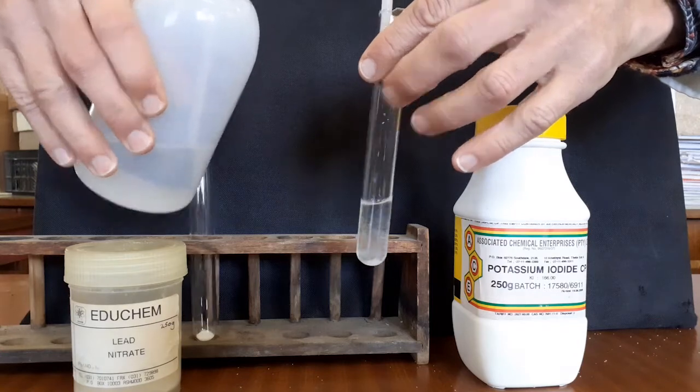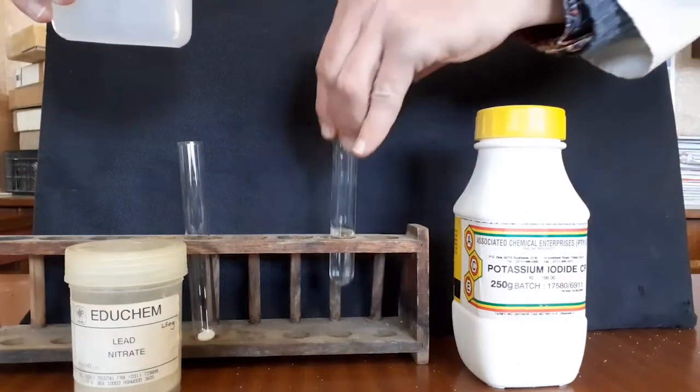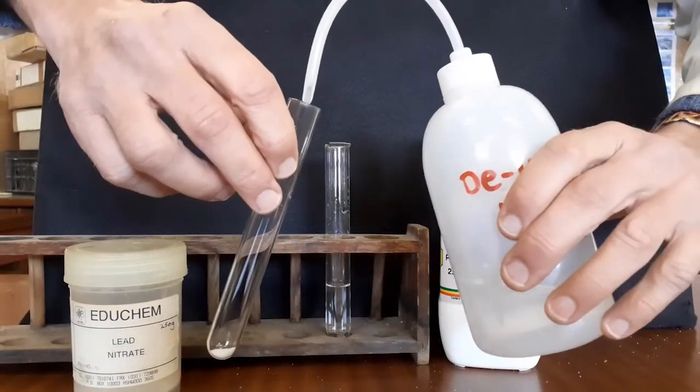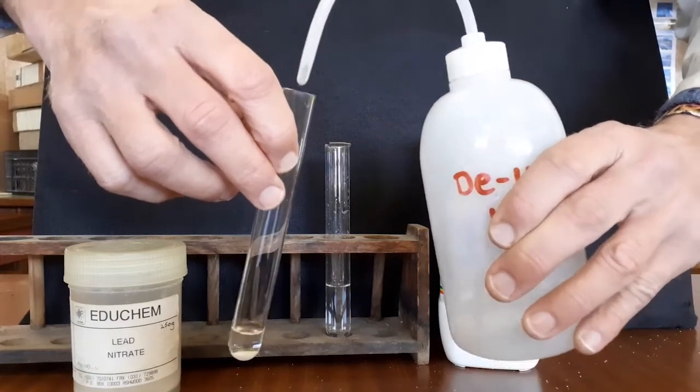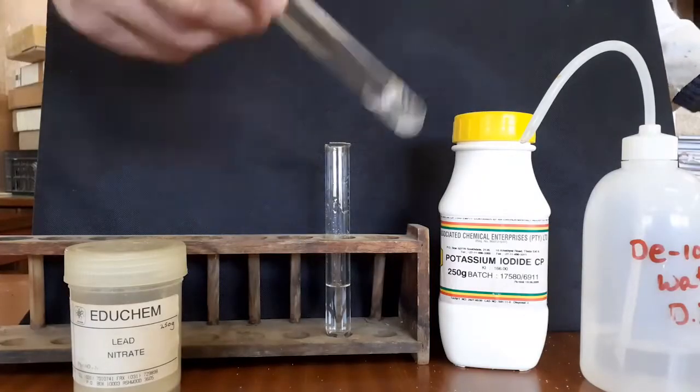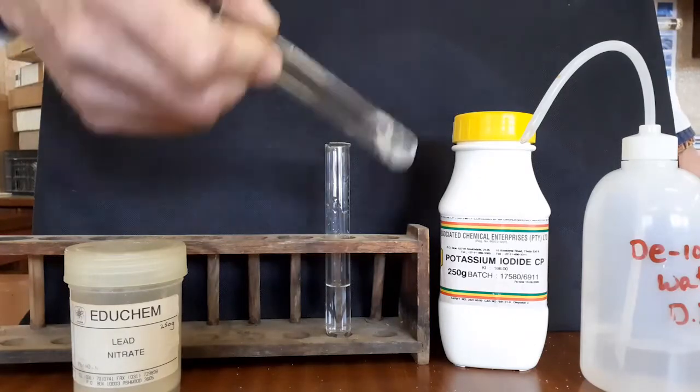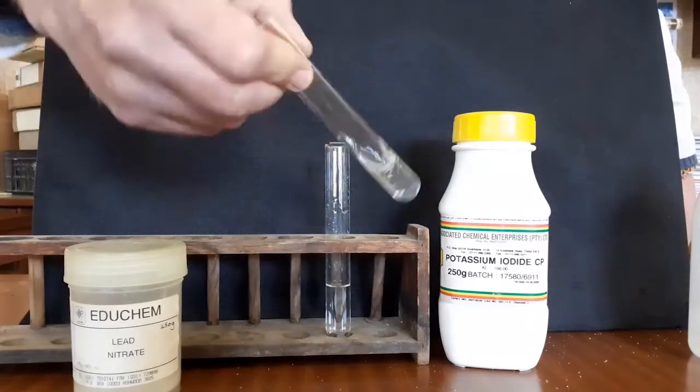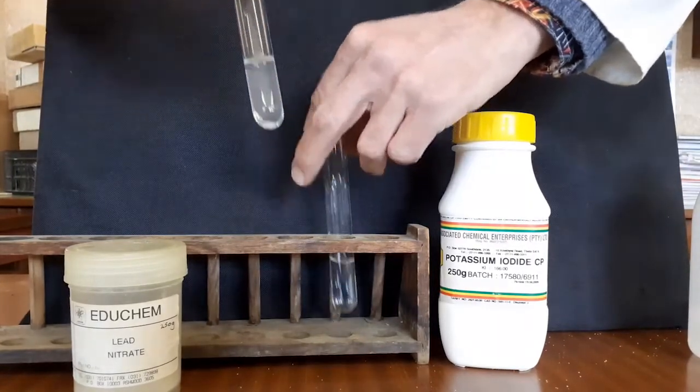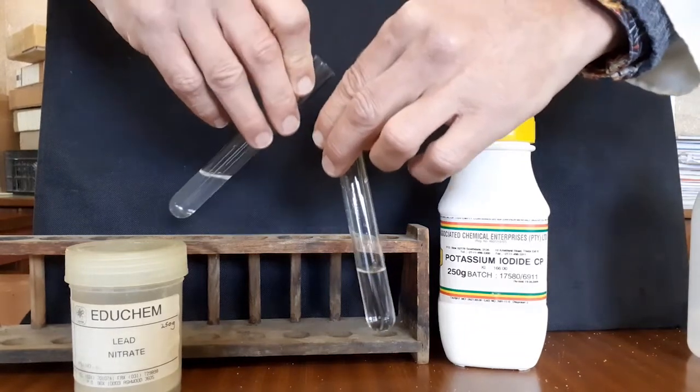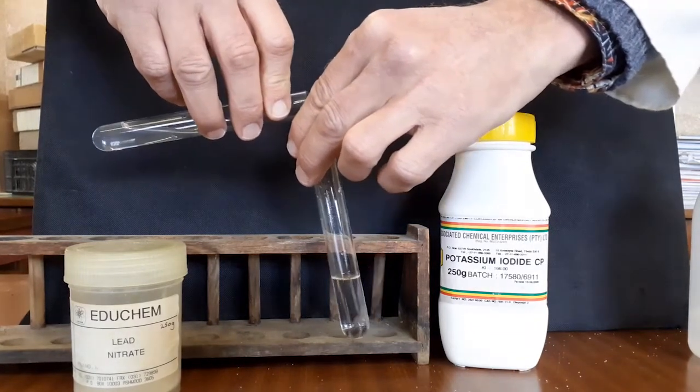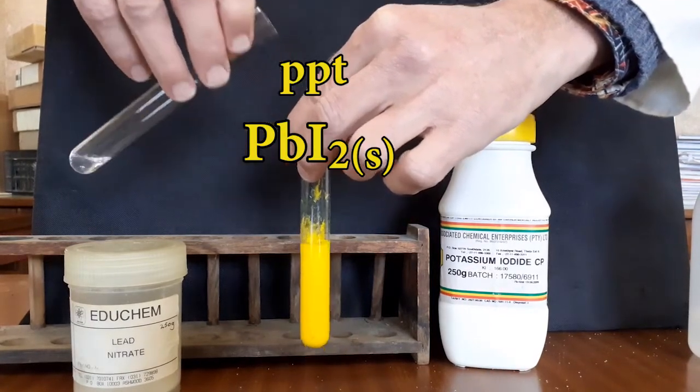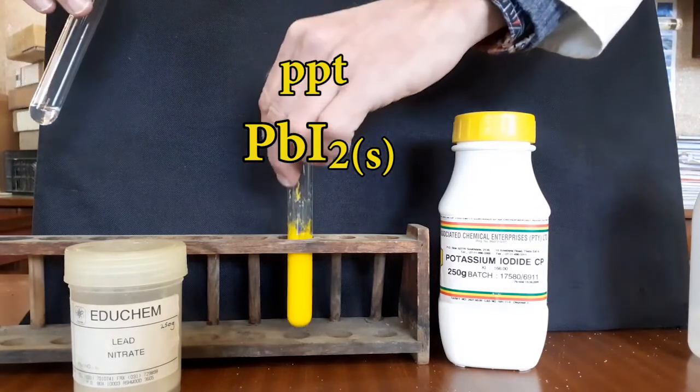Here we have potassium iodide salt. We dissolve these in deionized water. And here we have lead nitrate salt. Even heavy metal salts can dissolve as nitrates. Mixing them.